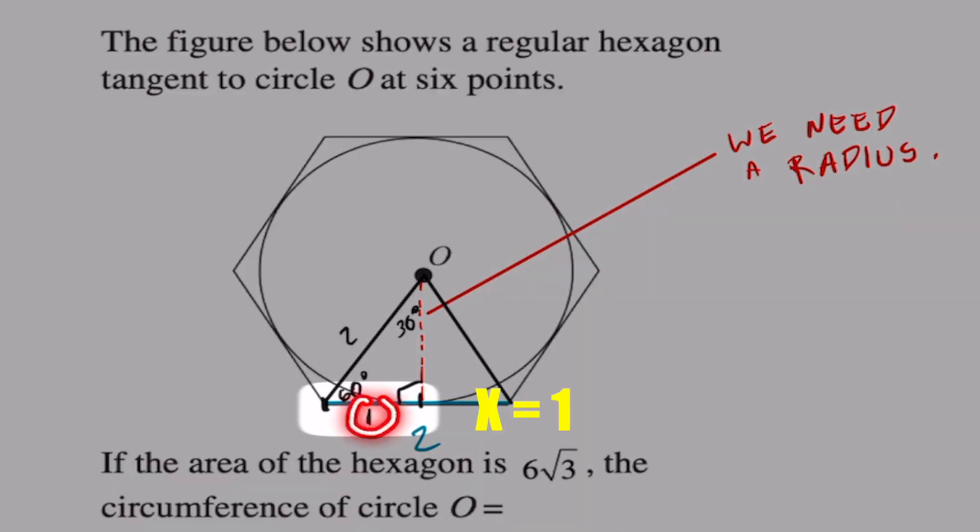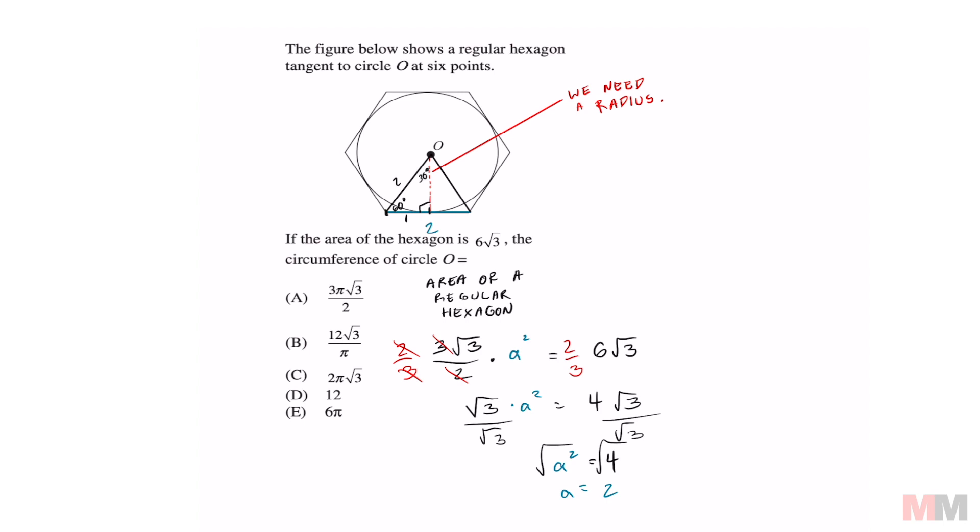In this question, we know that x equals 1—the side across from 30°—meaning that our radius is going to be 1 times √3, or just √3. Now that we know the radius, we can answer this question.